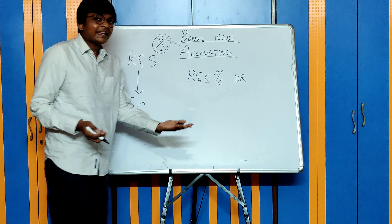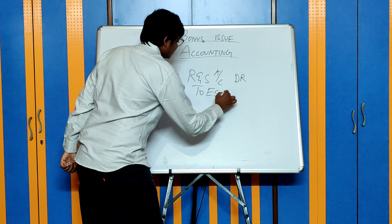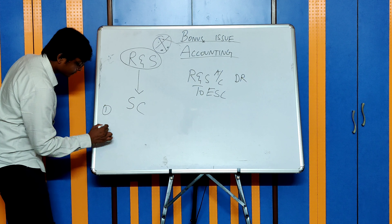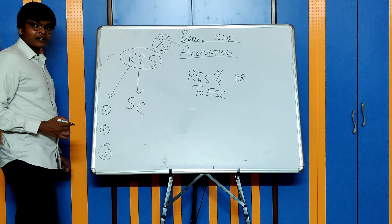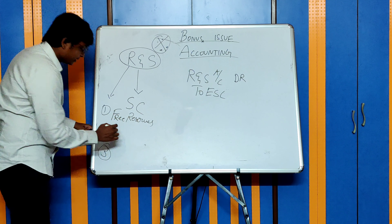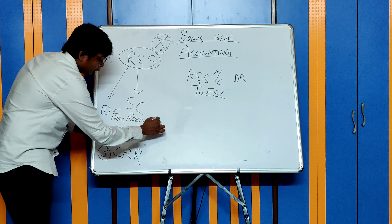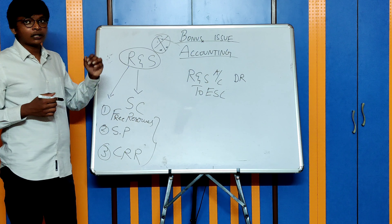Now we will see how to account for a bonus issue — this is important for your exam. In a bonus issue, reserves and surplus of a company is converted to the share capital of the company. So if reserves have to be converted to share capital, my reserves will decrease and my share capital will increase. The entry: reserves and surplus account is debited — decreasing my reserves — and equity share capital is credited — increasing my shares. This is the overall entry; however, it will undergo a small change.